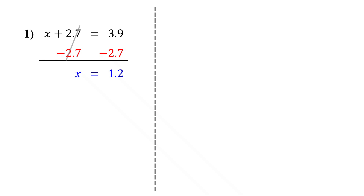With this method, instead of solving directly, we clear the decimals first. We do that by multiplying every term in the equation by 10, 100, or 1,000, depending on how many digits are after the decimal point. Let's see it in action with the same equation.